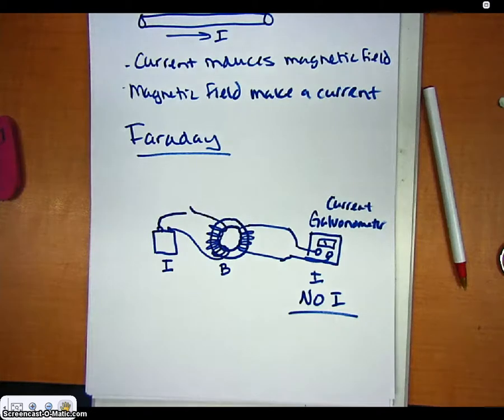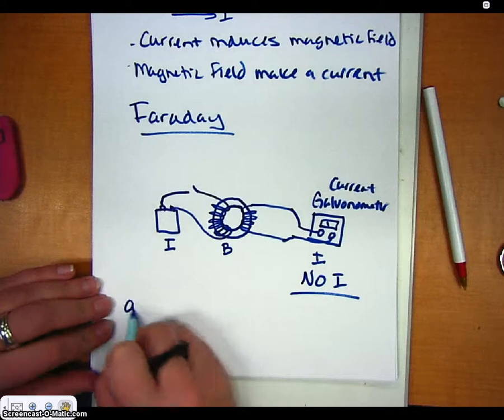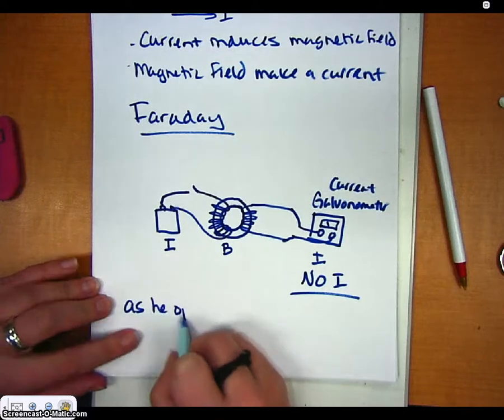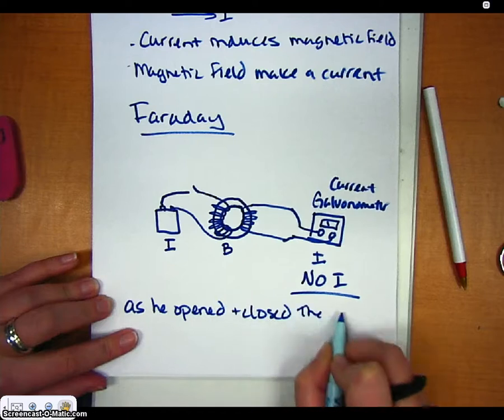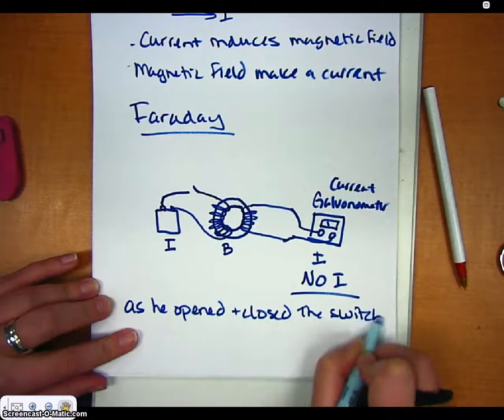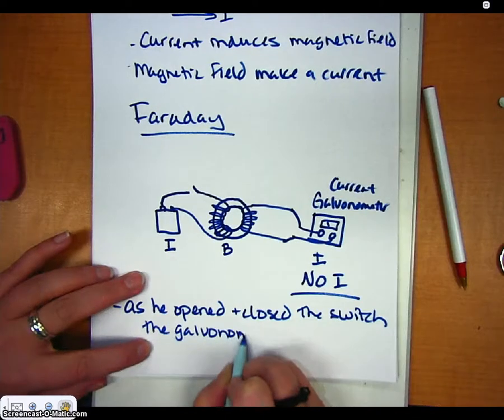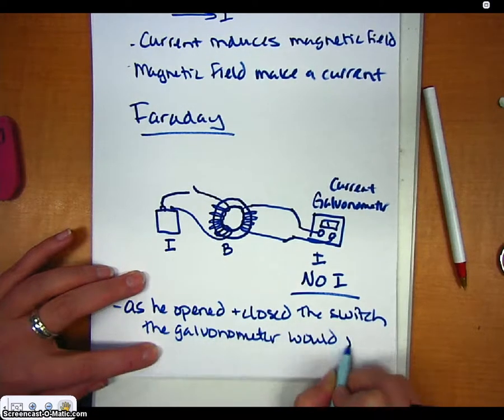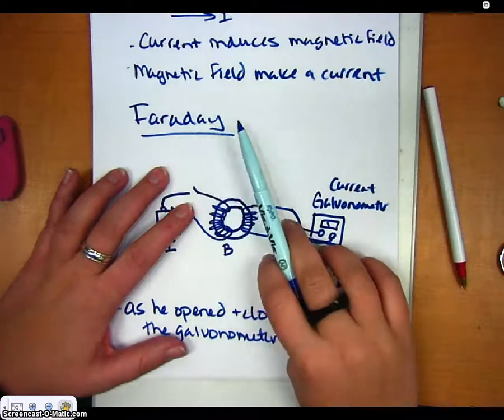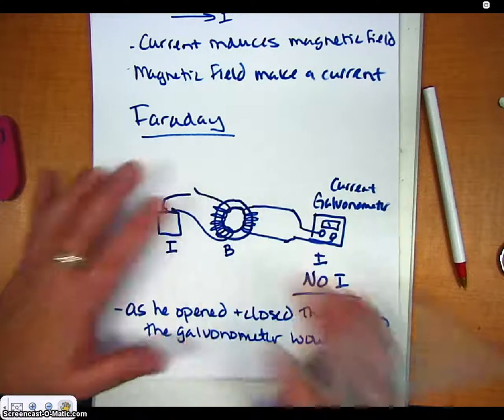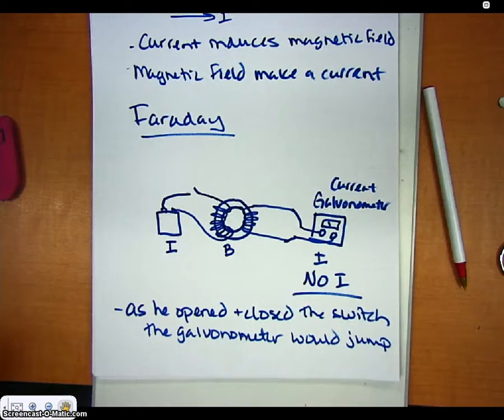However, something that he noticed was that when he opened and closed the switch, the galvanometer would jump. As he closed the switch it would jump, and then he would open the switch, and then he would close the switch. But once it was closed or opened, it would just sit there on zero.